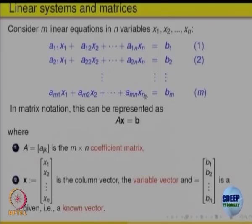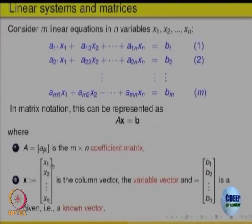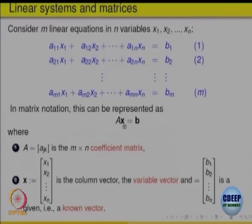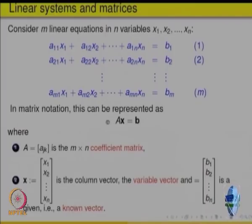This system of m equations in n variables can be written in matrix form. Taking rows a11, a12, ..., a1n; a21, ..., a2n and so on, we call that matrix A — the m×n coefficient matrix. The unknown vector x = (x1, x2, ..., xn) is an n×1 column vector. Multiplying A (m×n) by x (n×1) gives an m×1 result, equal to the vector b = (b1, b2, ..., bm). So in matrix form the system is Ax = b.